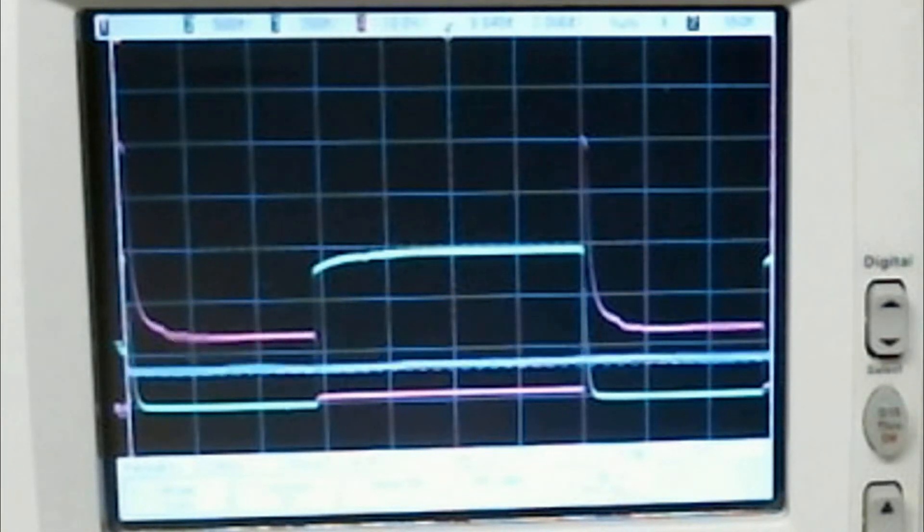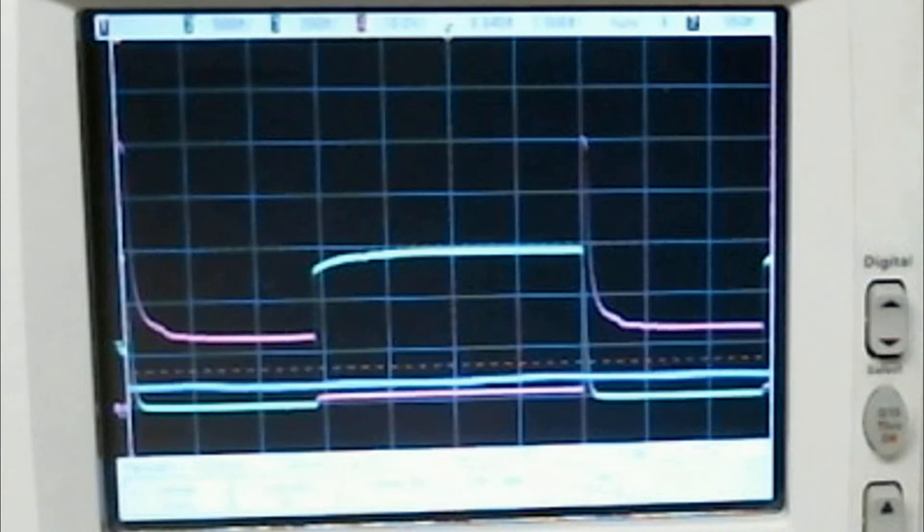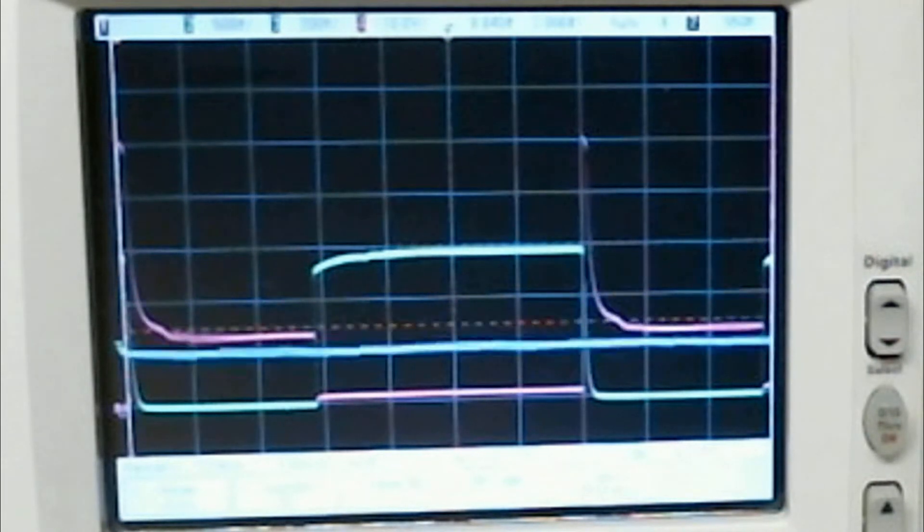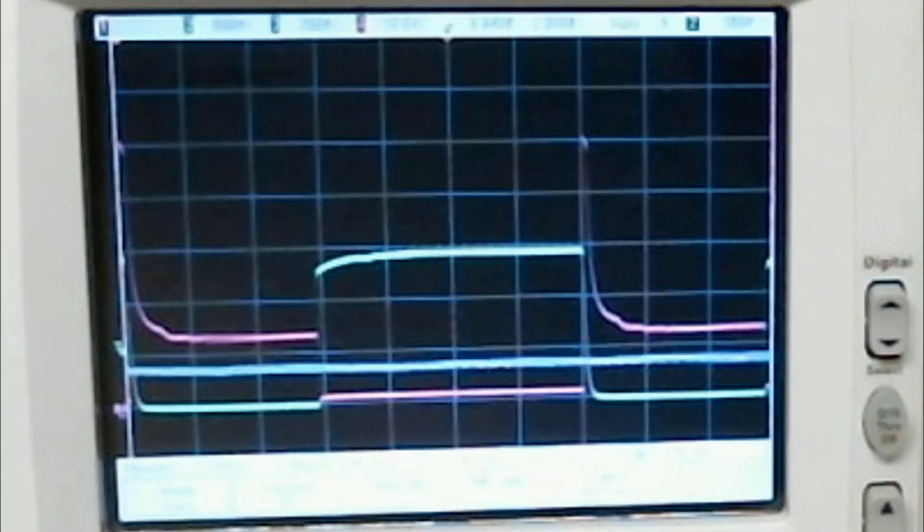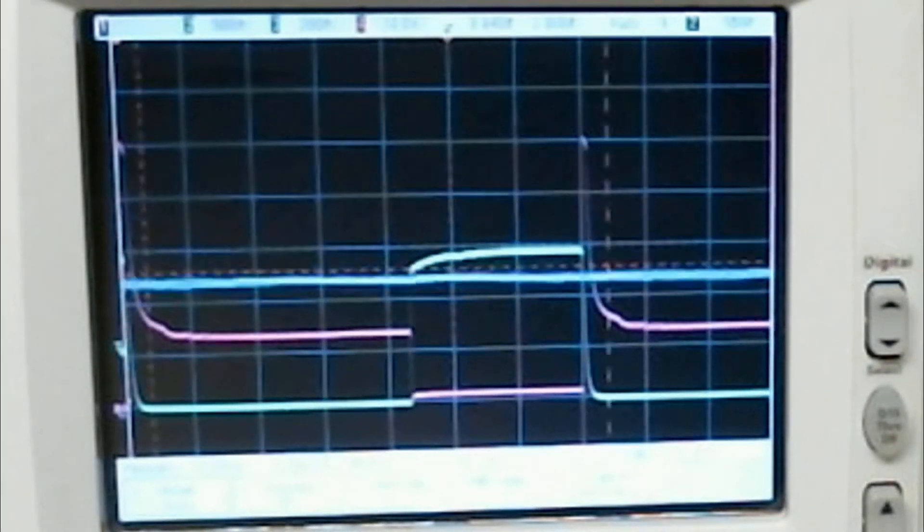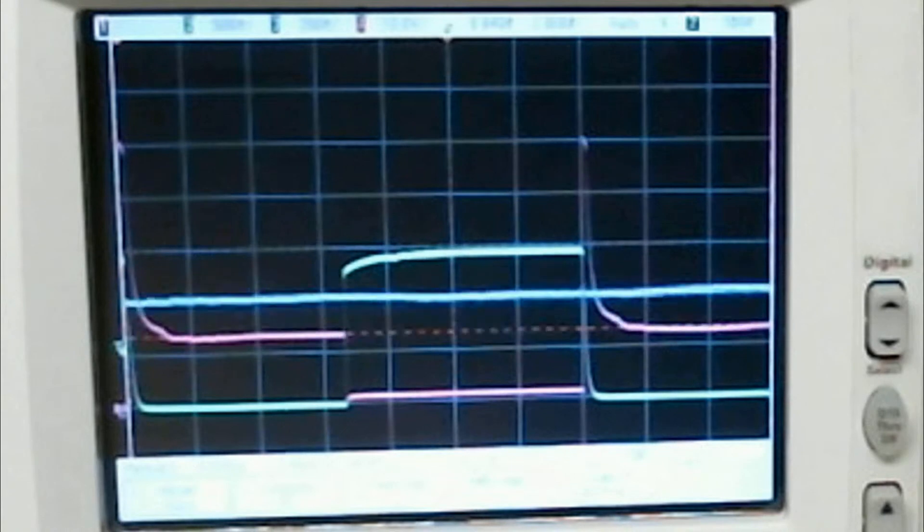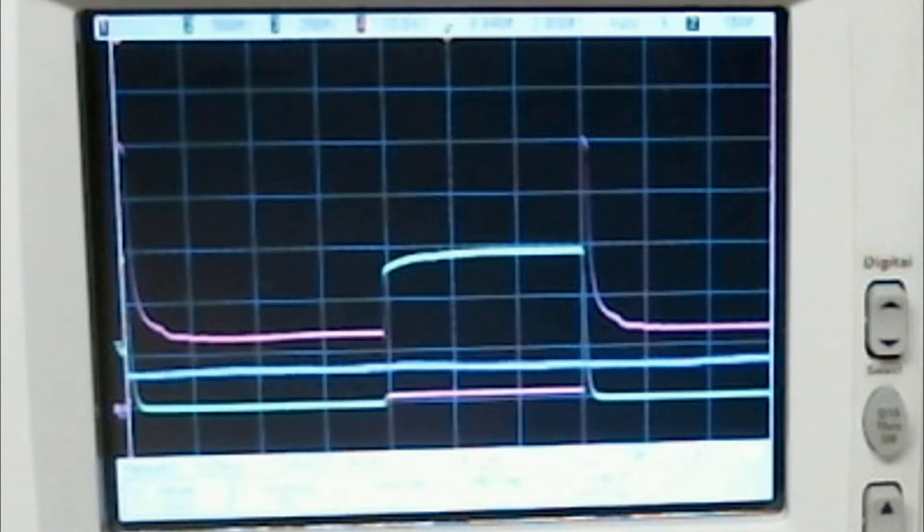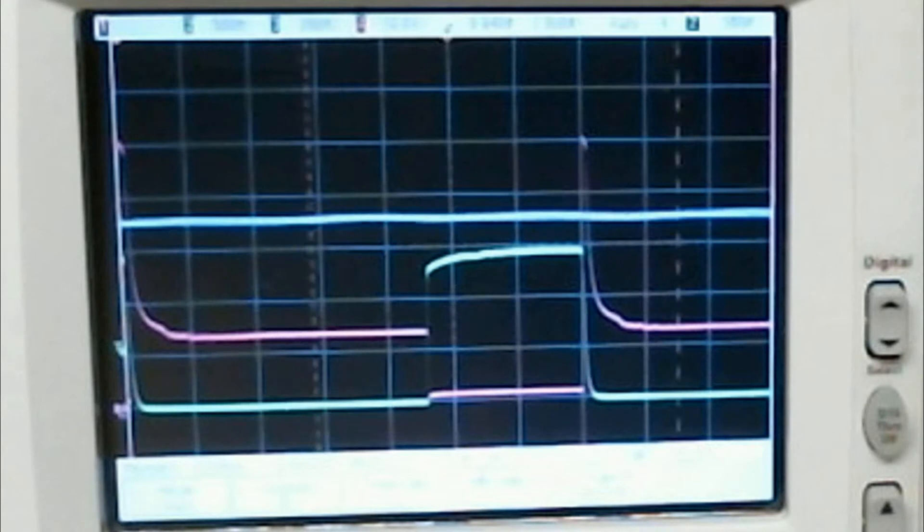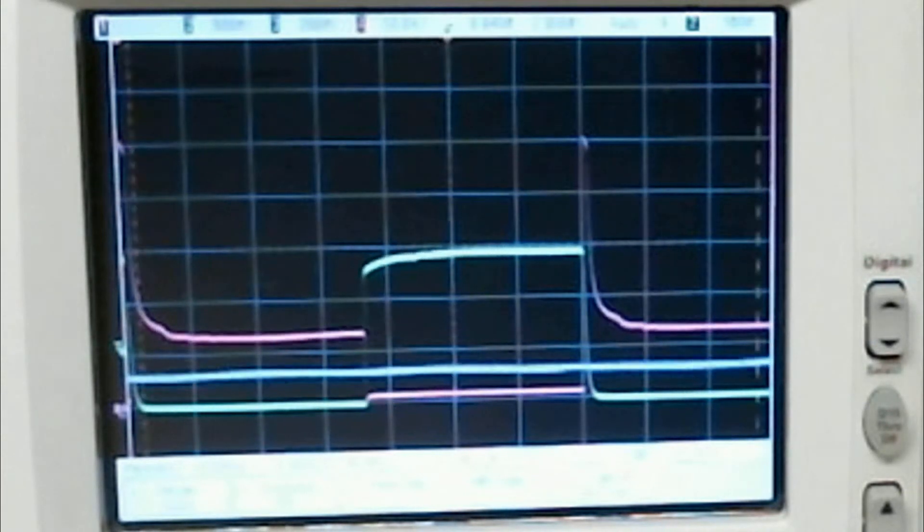When it's in cold start or full throttle, the oxygen sensor signal cannot cause the duty cycle of the output to change. Now you can see it's no longer in the full throttle open loop mode, and it's once again being controlled by the oxygen sensor signal.